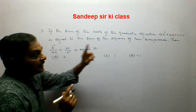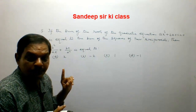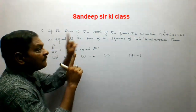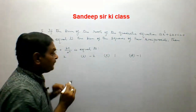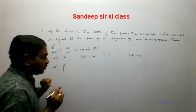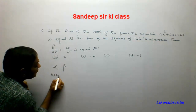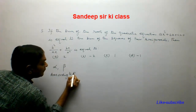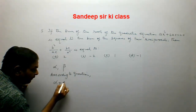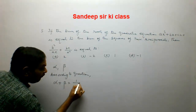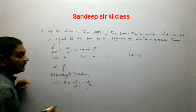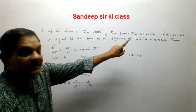The equation ax² + bx + c = 0 is the standard quadratic equation. Let alpha and beta be the two roots. According to the question, we have alpha + beta = 1/α² + 1/β², which is the sum of the squares of their reciprocals.